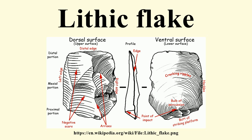Prominent bulbs of force generally indicate that a hard hammer percussor was used to detach the flake. Flakes displaying this characteristic are referred to as conchoidal flakes, and are indicative of primary reduction strategies. More moderate and diffuse bulbs may indicate the use of a soft hammer percussor, such as bone, wood, or antler, which produces the bending flakes often associated with bifacial thinning and trimming.